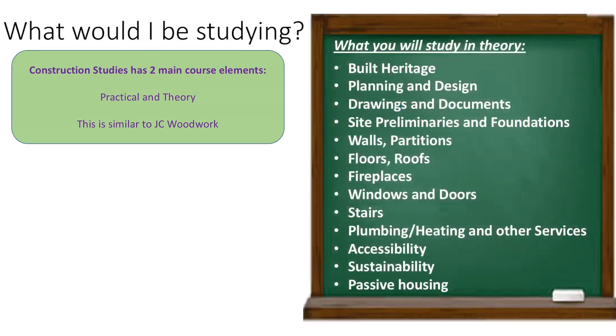The theory element is quite diverse and deals with everything from built heritage, which are buildings and construction in the past, up to building and construction today. This includes selecting an appropriate site, site investigations, designing a house, submitting planning permission, digging and laying foundations, the whole exterior structure like walls, roofs, windows, and doors, internal structures like floors, partition walls, stairs, and fireplaces, and all the services like plumbing, drainage, and electricity involved in building a house.